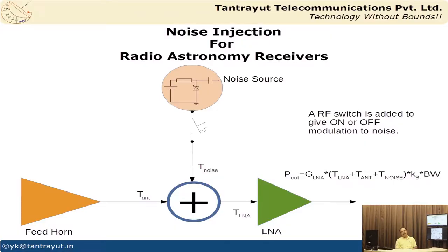We have to observe particular radio sources with our instrument, so adding noise all the time is not desirable because it completely degrades your system temperature and the telescope's sensitivity is lost. Therefore, you need a clever option to turn the noise source on or off: when needed, a control signal fires the noise diode and injects noise into the system; when the control signal is absent, the noise disappears and you have just the antenna temperature and receiver temperature.